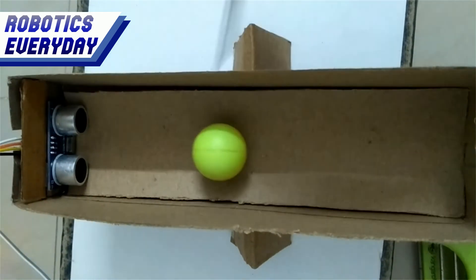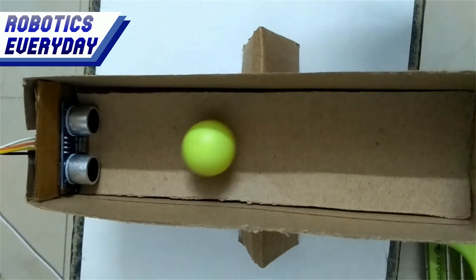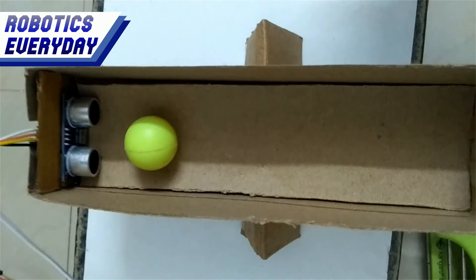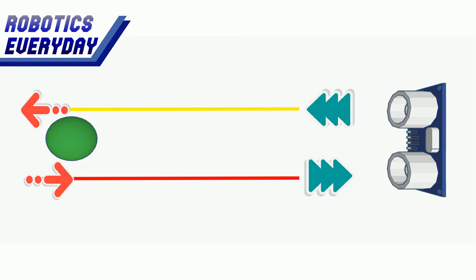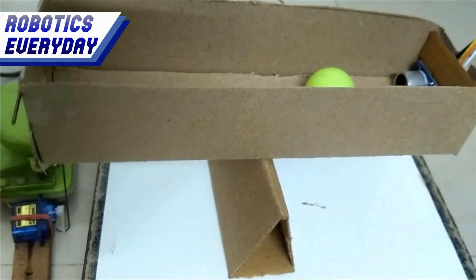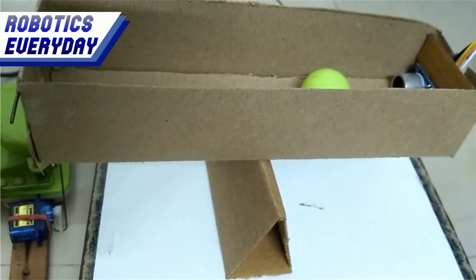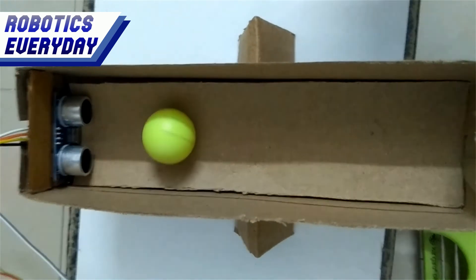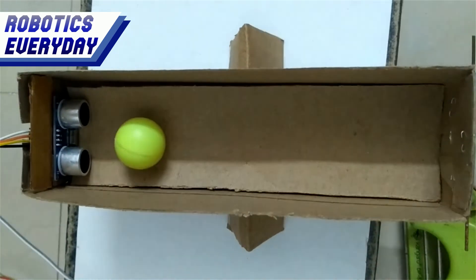This green ball seems to be balanced, but it is not in the middle of the box. The ball is too small, so the ultrasonic waves coming out of the sensor easily pass from the sides of the ball. That's why it is not able to detect this ball properly. The sensor gets a constant reading if the ball is exactly in between the transmitter and receiver transducer of the sensor.